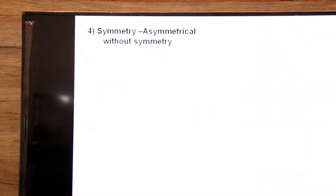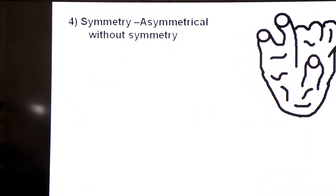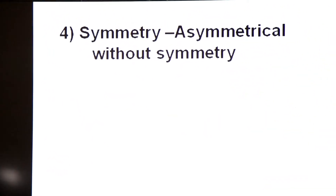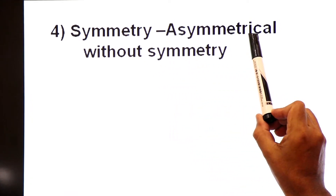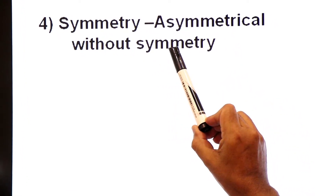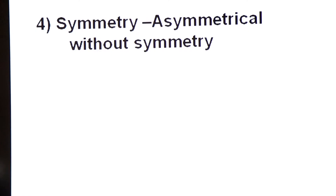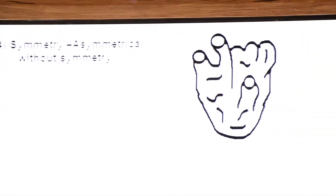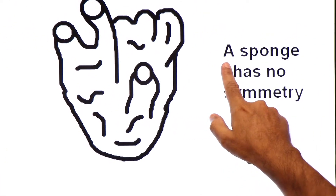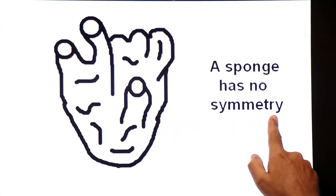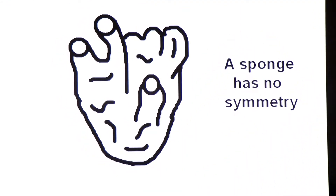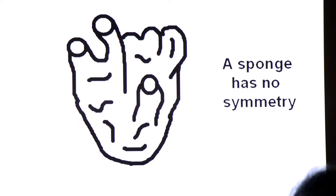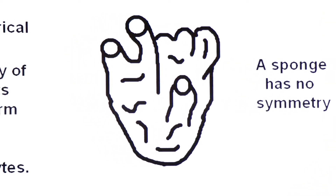Next, symmetry of sponges. Sponges are asymmetrical, meaning without symmetry. They do not have a particular body shape. A sponge has no symmetry — its body cannot be cut into two equal parts by an imaginary line.